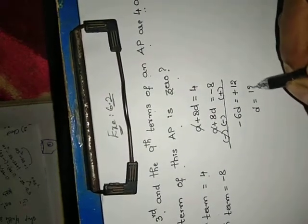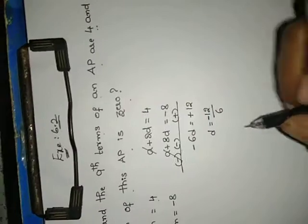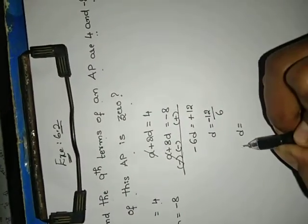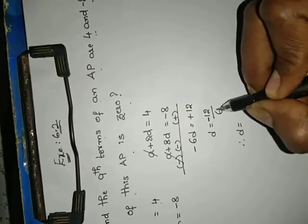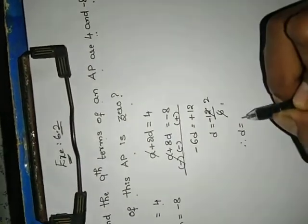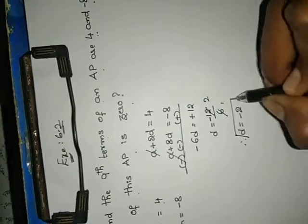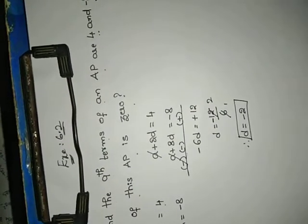D equals to 12 by 6. This minus is there. Therefore, D equals to — 6 ones are 6, 6 twos are 12 — D equals to minus 2. We have got the D value.